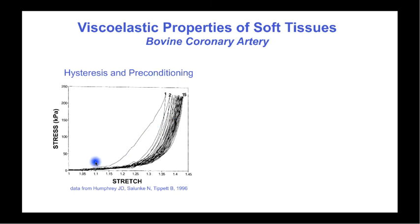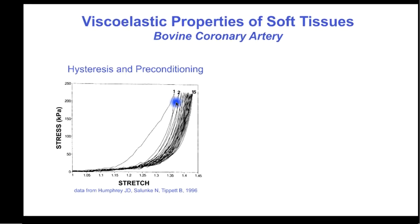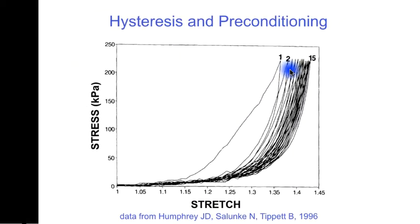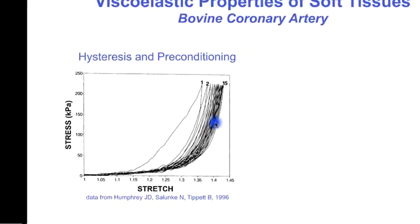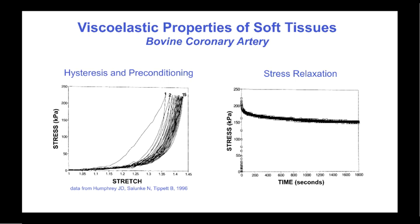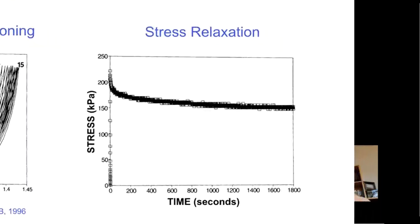Biological tissues frequently exhibit anelastic or nonelastic properties that are not associated with irreversible damage or failure. These include hysteresis, in which the stress-strain curve for loading differs from the stress-strain curve for unloading, and the area of the stress-strain loop represents the energy dissipated during the loading and unloading cycle. In this test on coronary artery, we also see preconditioning behavior, whereby each successive cycle of loading to the same maximum stress and unloading is different, but eventually with sufficient repetitions the stress-strain loop becomes reproducible and the tissue is said to be preconditioned.